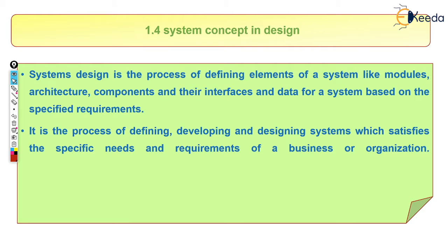System design is a process of defining elements. In case of machine components, for an engine it involves defining the piston, cylinder, power capacity, shape, size, and dimensions. It is also a process of defining, developing, and designing systems which satisfy the specific needs and requirements of a business or organization — developing and designing machine components which satisfy our particular needs of power and speed.